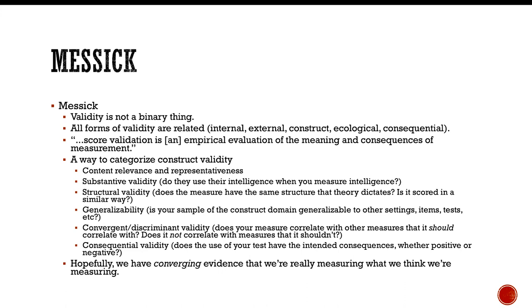And to quote Messick, he said, score validation is an important empirical evaluation of the meaning and consequences of measurement. And so he identified various ways to categorize construct validity. He talked about content relevance and representativeness. He talked about substantive validity. So in this situation, let's say you're measuring intelligence. If you are measuring intelligence, people should be using their intelligence to measure or to take the exam that you're administering. Likewise, if I am measuring statistical knowledge, people should be accessing their statistical knowledge when answering my exam. Structural validity. So does the measure have the same structure that theory dictates? And is it scored in a similar way? And this would make more sense if you guys had some factor analysis. Basically, if you have a factor structure, if the theory says that it should have a certain factor structure, then your exam should have the, or your measure of that construct should have the same factor structure.